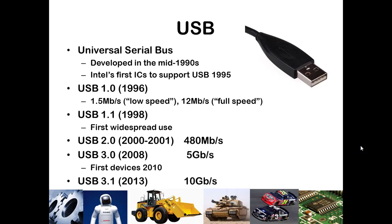USB 2.0 achieved up to about 480 megabits per second. Now we have USB 3.0 as the emergent standard, and it can get 5 or 10 gigabits per second, which is quite good for data transmission to external hard drives, video transmission, and all those types of things.